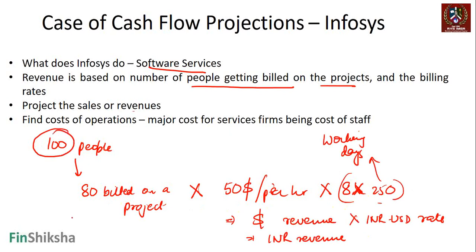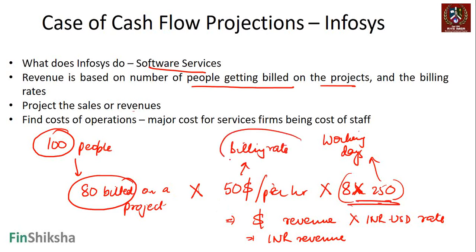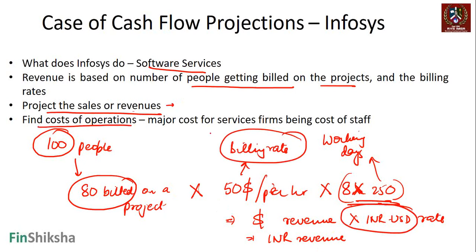The key ingredients for projecting revenues of a software services company are: first, the number of people working; second, the proportion getting billed on projects; third, the billing rate; and fourth, the INR/USD exchange rate. We also find the cost of operations — the major cost for services firms being staff cost. Since all 100 people are paid salaries, we can find salary per person from this equation.